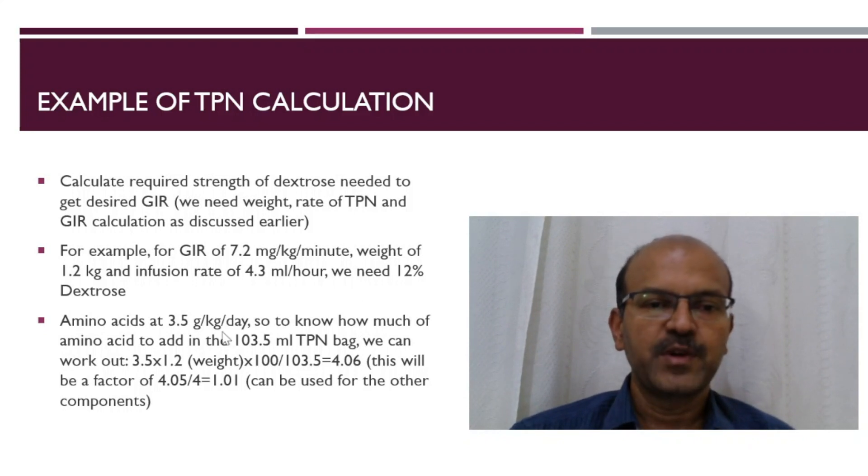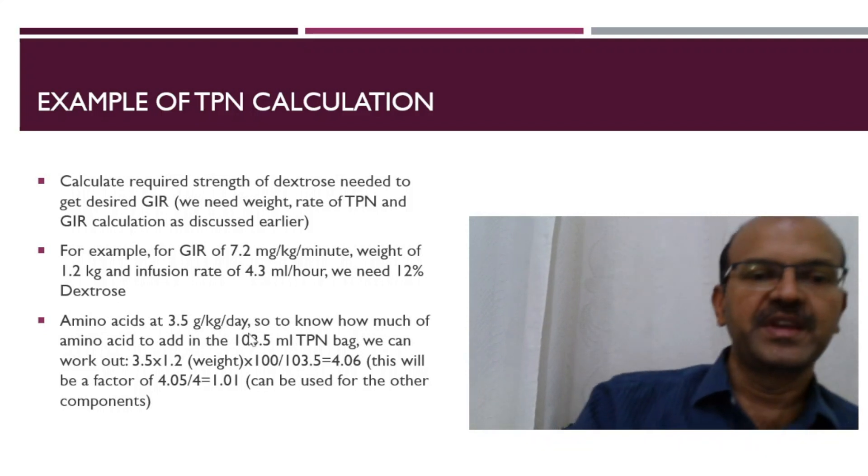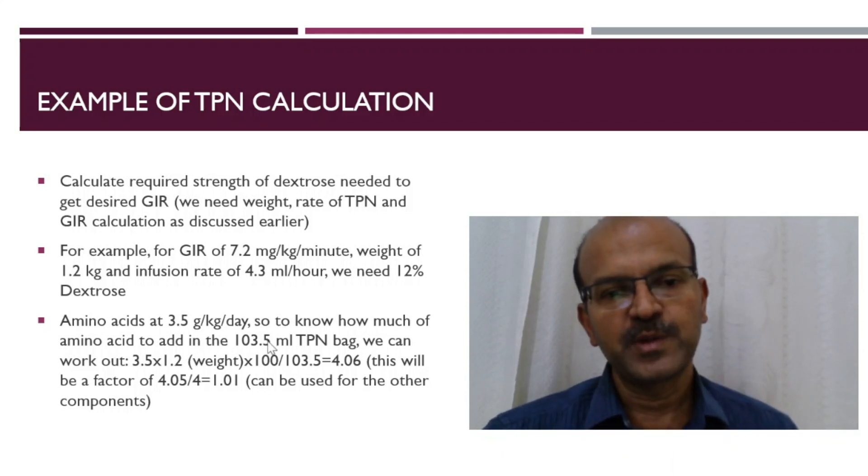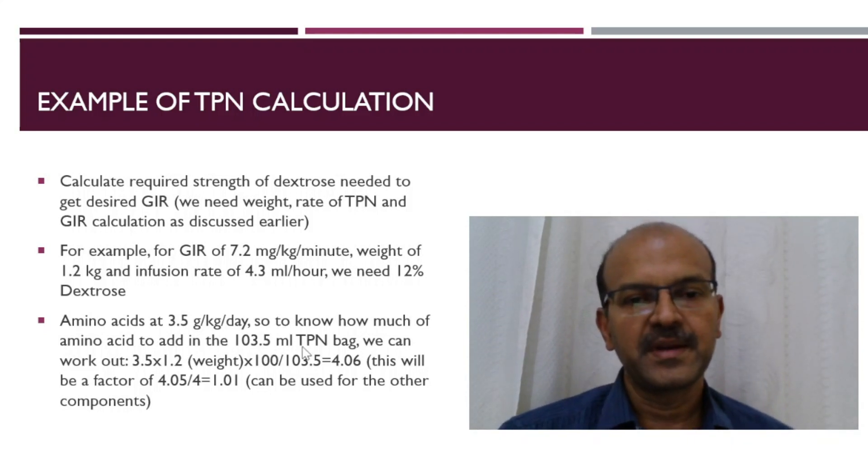Amino acids at 3.5 grams per kg per day. Once we know how many grams per kilo of these components we need, we can work out how much to add in the bag of 103 ml. So 3.5 times weight, that's the actual amount of amino acid we need, times 100 divided by 103, so 4.06. This same factor of 4.06 divided by 4 is 1.01, which can be used for the other components to convert as well.